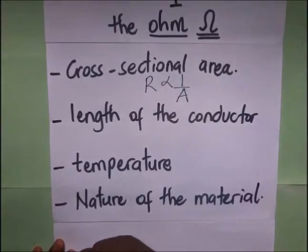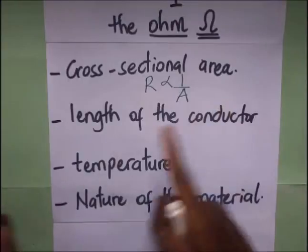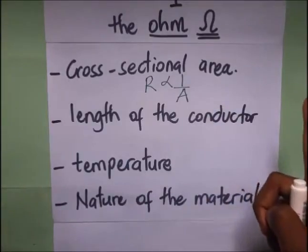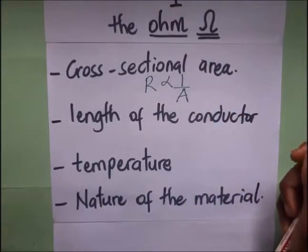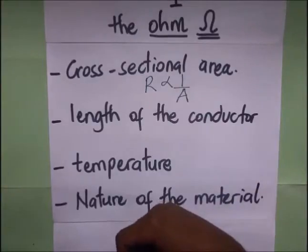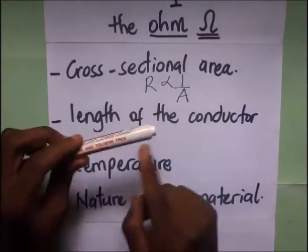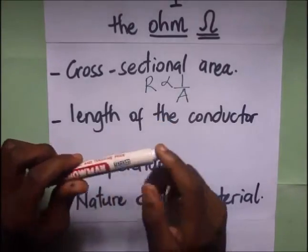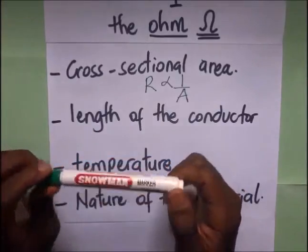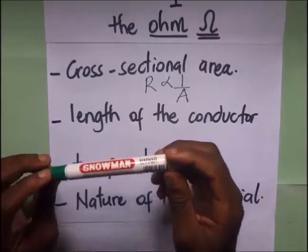Let's go to the length of a conductor. The longer the conductor, the longer the distance the electrons will have to travel. Increased length will lead to longer paths for electrons, and that will lead to more electron collisions between electrons and ions and atoms along the length of the conductor. This will definitely lead to reduced drift velocity of the electrons.